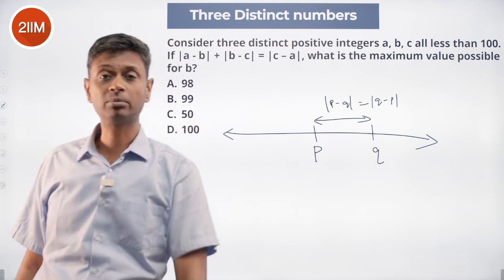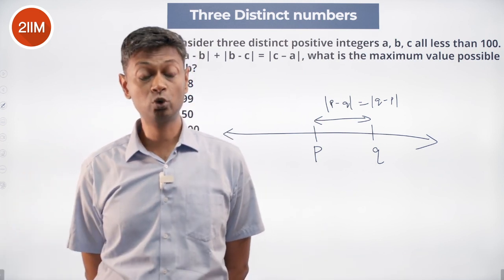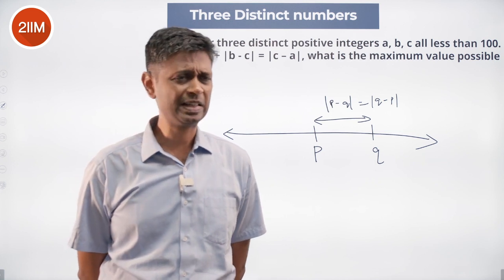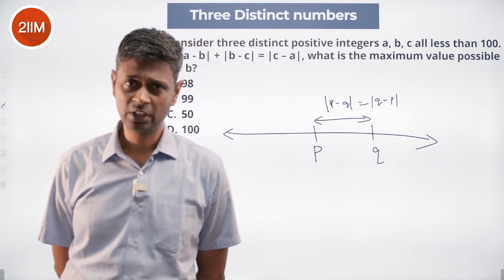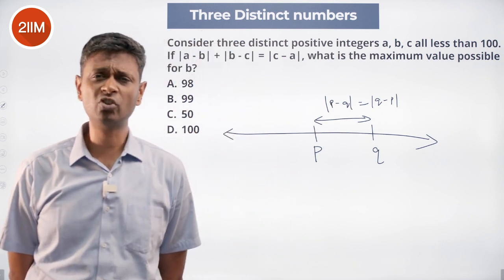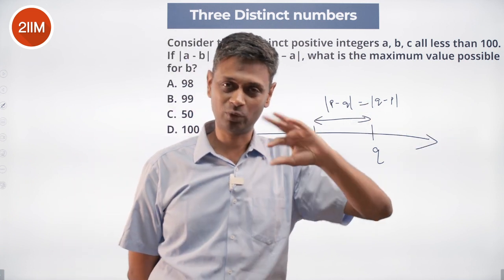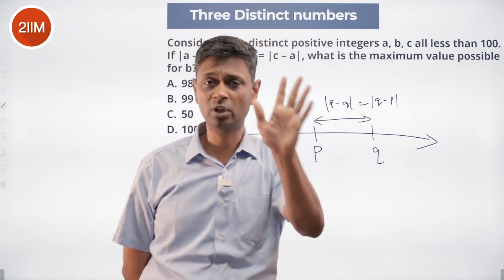Distance between any two points on the number line is larger number minus smaller number. Distance between 2 and minus 4 is 2 minus minus 4. Distance between 3 and 5 is 5 minus 3. Distance between p and q is larger number minus smaller number, or modulus of p minus q. Modulus of p minus q is the same as modulus of q minus p. One is positive, the other is negative. Once you take modulus, both are positive.